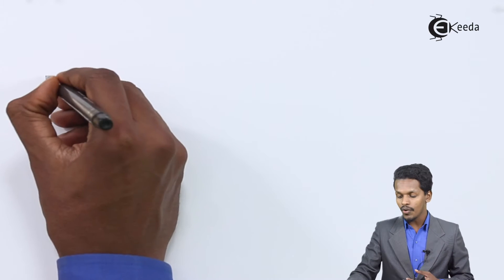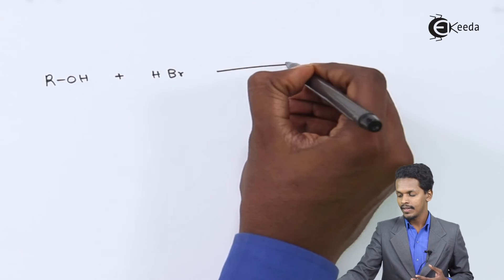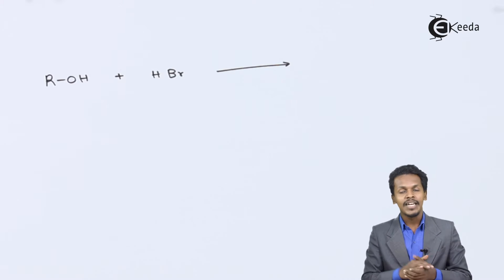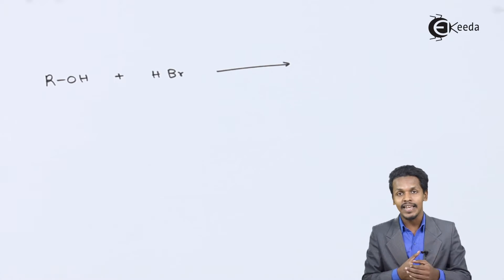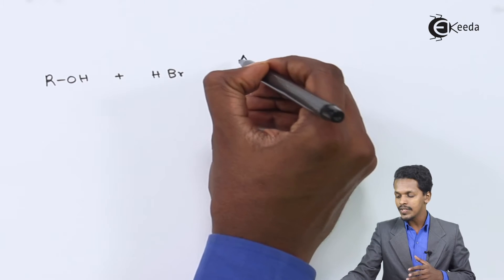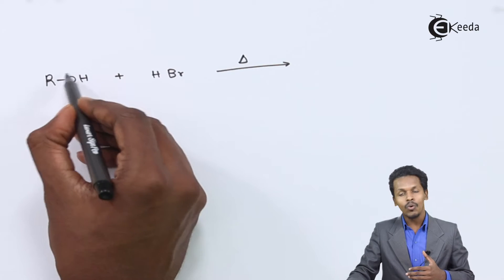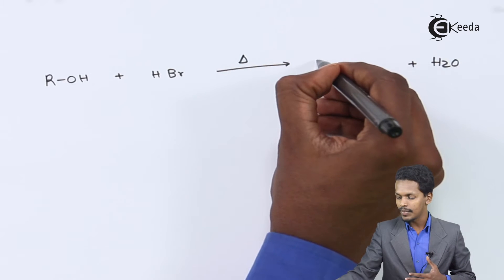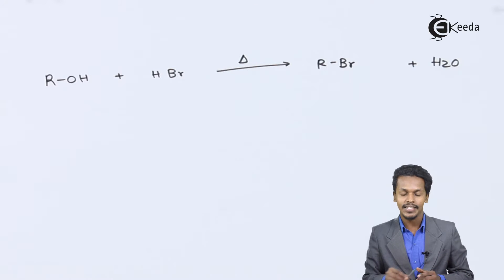Now let's talk about the reaction of alcohol (ROH) with hydrogen bromide (HBr). It has been found that HBr is a much stronger acid compared to HCl. That is why no catalyst is required in this case. We only need to provide a certain temperature. The H and OH are removed as H2O, and the main product is RBr, that is alkyl bromide.